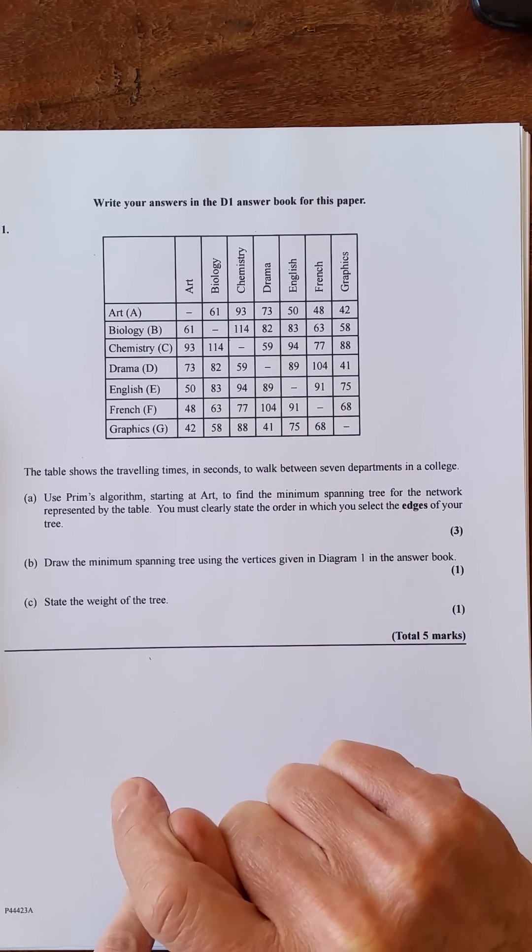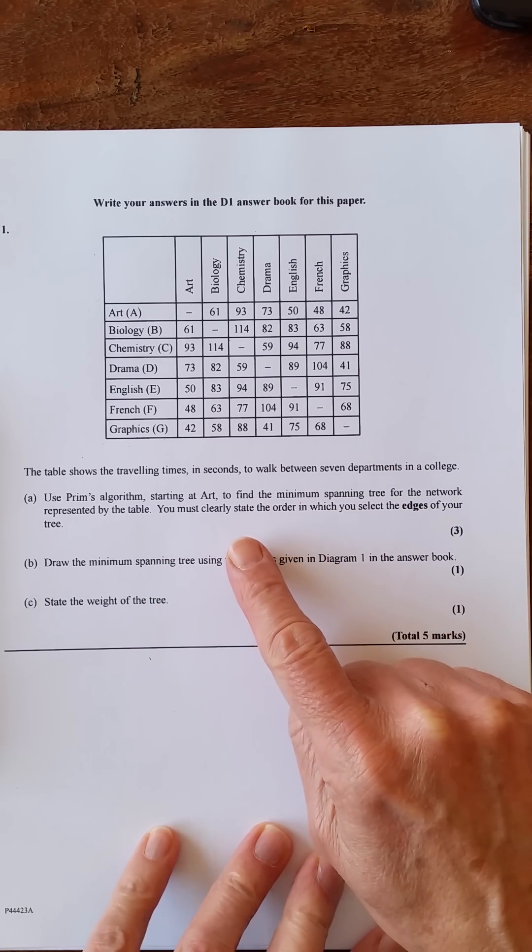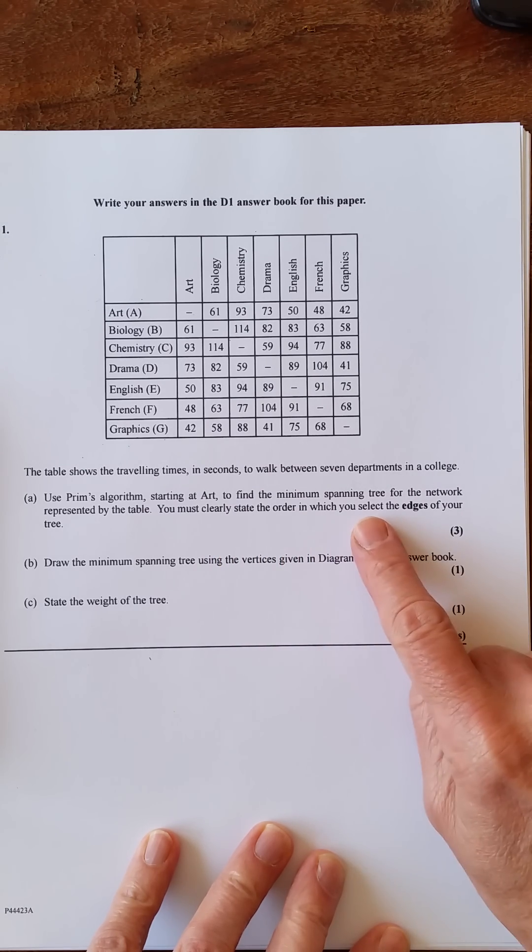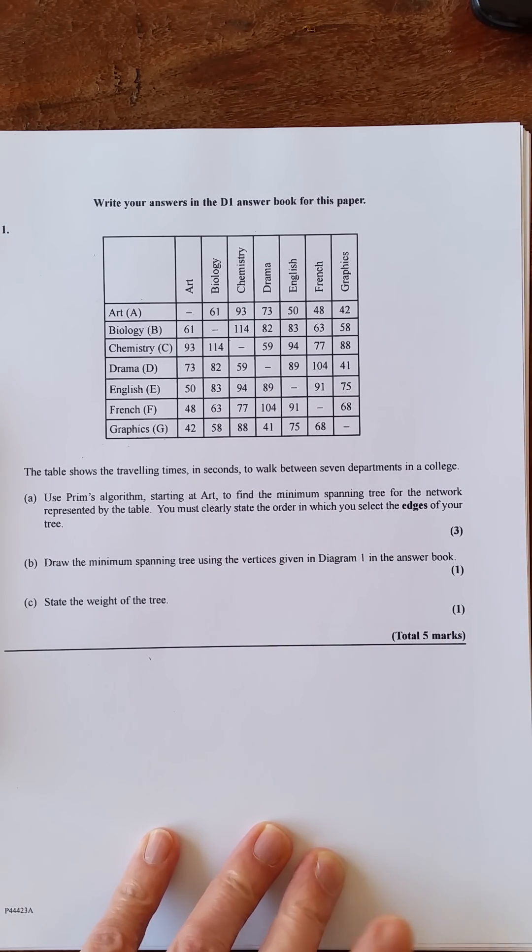Question A asks us to use Prim's algorithm starting at ART to find the minimum spanning tree for the network represented by the table, and you have to clearly state the order in which you select the edges of your tree.